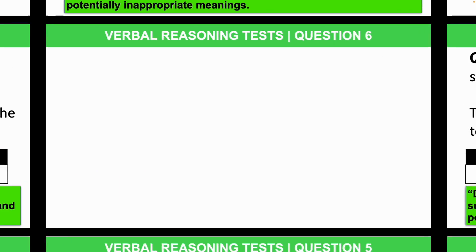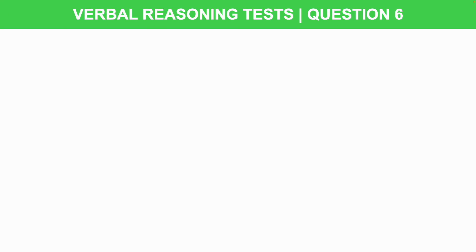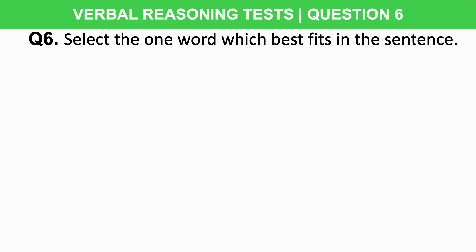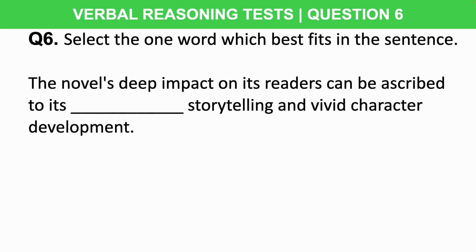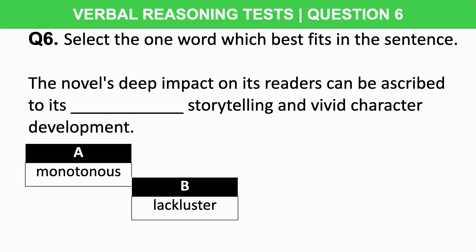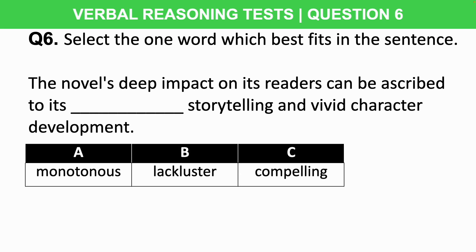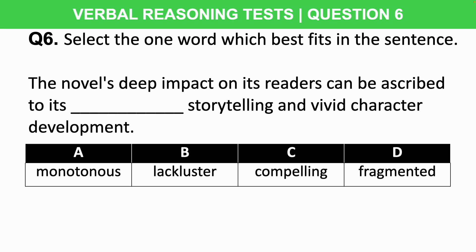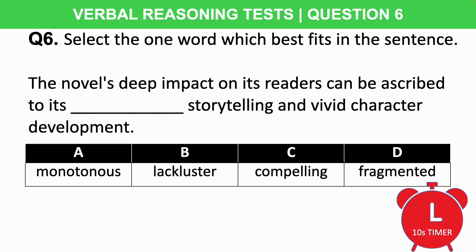Now practice some of these questions yourself under timed conditions. Question six: select the word which best fits the sentence: 'The novel's deep impact on its readers can be ascribed to its [blank] storytelling and vivid character development.' Is the missing word A) monotonous, B) lacklustre, C) compelling, or D) fragmented? You have just 10 seconds on the timer — let me know your answer in the comment section below.